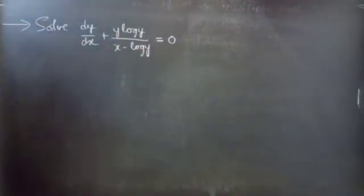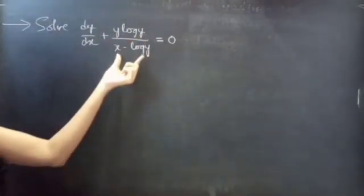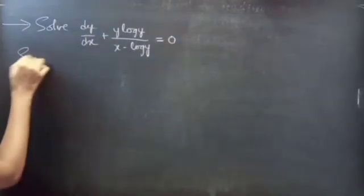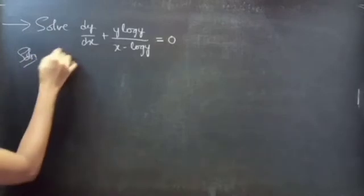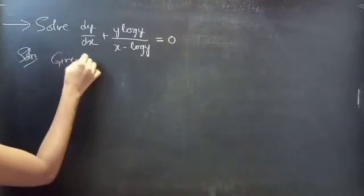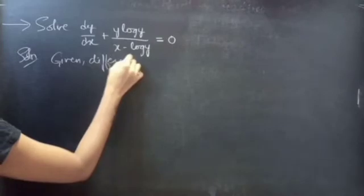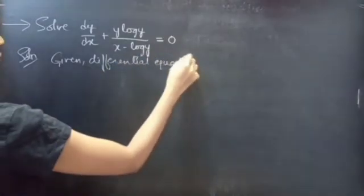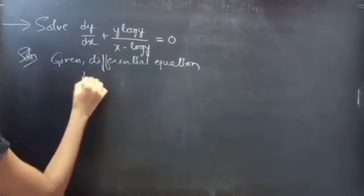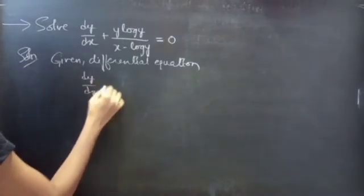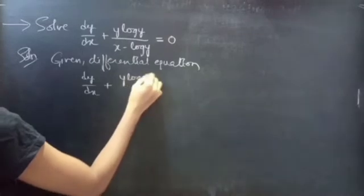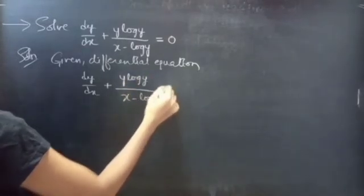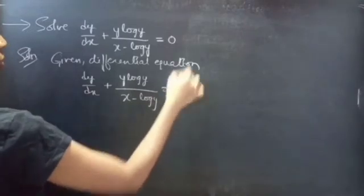Problem: solve dy/dx plus y·log(y)/x minus log(y) equals to 0. Consider the given equation as equation 1.